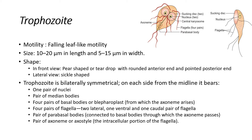The anterior part is rounded and the posterior part is pointed — see picture one. In lateral view, it looks like a spoon shape — picture two.